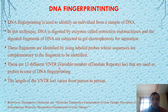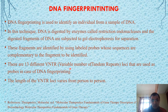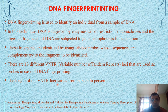There are 13 different types of variable number of tandem repeats. These loci are used as probes in the case of DNA fingerprinting. In DNA fingerprinting, these hypervariable sequences — the 13 variable number of tandem repeats — are variable from person to person, and these VNTR sequences are identified through this technique.